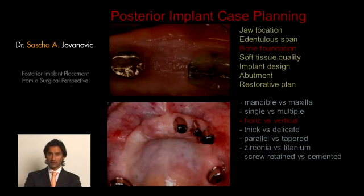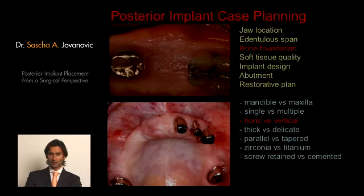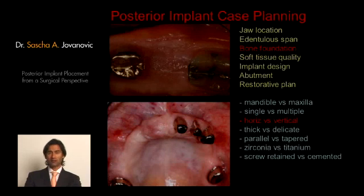I want to know what the soft tissue quality is — do I have to consider mucogingival treatments, or is it sufficient that we can proceed with implant placement? Then I want to know about the implant design: what kind of implant are we planning — a parallel implant like Brånemark, or tapered like a Reploy Select? Then I go to abutments — are we choosing a zirconia abutment or titanium? Depending on strength and aesthetic needs, we can choose either, or often zirconia for certain frameworks today.